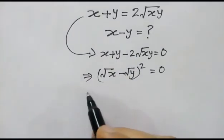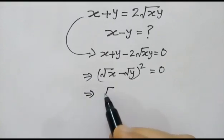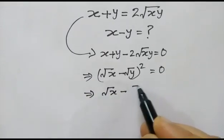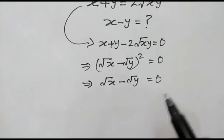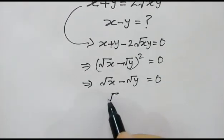So square root of x minus square root of y will be equal to 0.